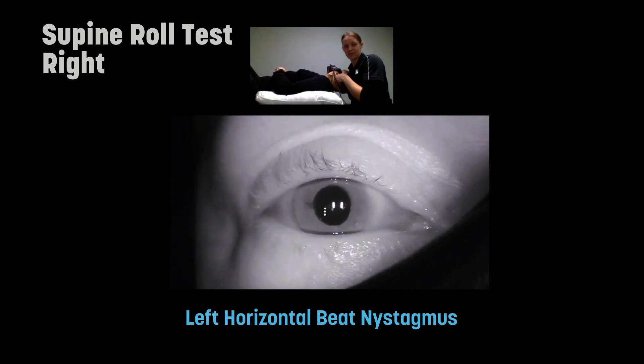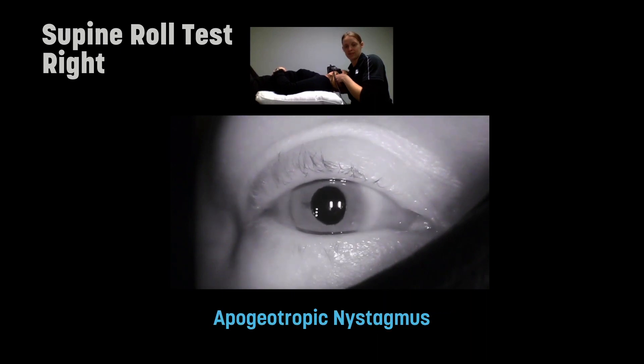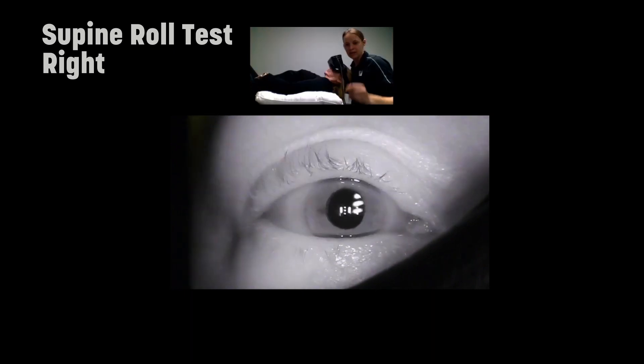We usually call this an apogeotropic or ageotropic nystagmus, so the nystagmus is beating away from the ground. I'm considering the diagnosis of horizontal canal cupulolithiasis, but we need to see what happens the other side of the roll test first.